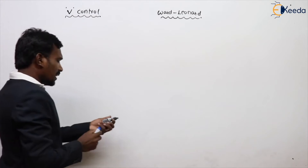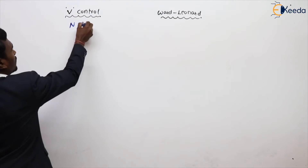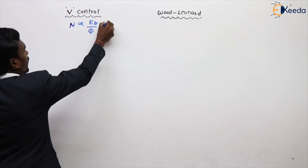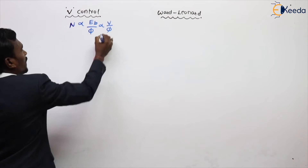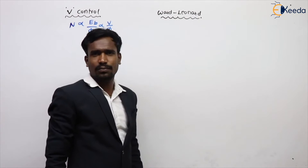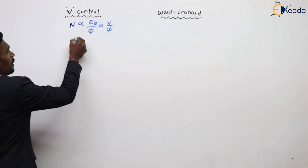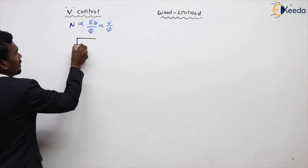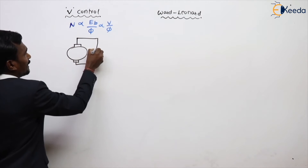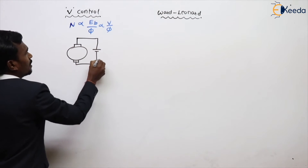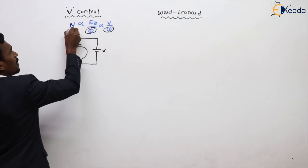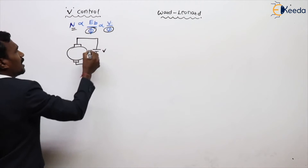Generally, we know that the speed is inversely proportional to flux but directly proportional to Eb — that is, the speed is directly proportional to voltage and inversely proportional to flux. For example, if you take a separately excited motor, in this case the flux is constant, so the speed depends on the voltage.